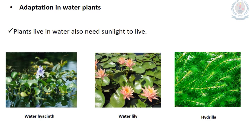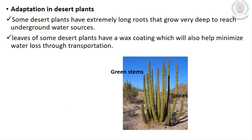Adaptations in water plants: water plants also need sunlight and must carry out photosynthesis. Aquatic plants such as water hyacinth and water lily have waxy leaves that act as waterproof substances to prevent damage. The hydrilla has air spaces in its stem, which helps to keep it upright while being supported by the water.